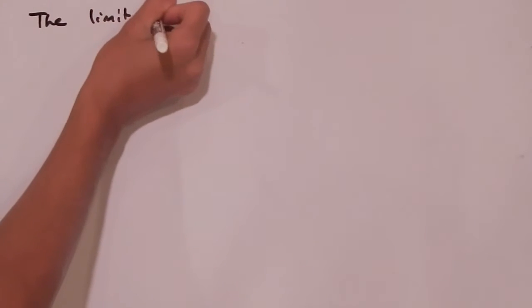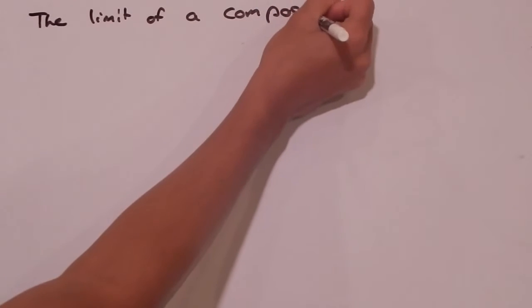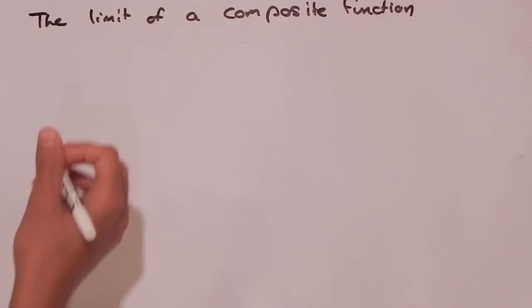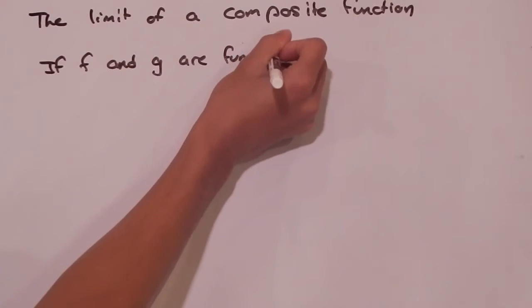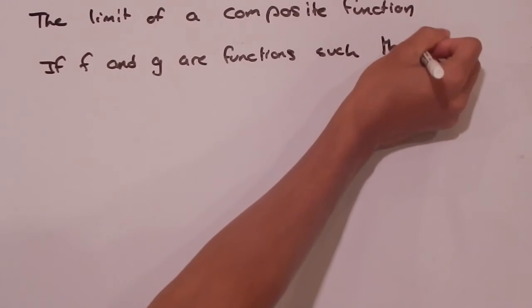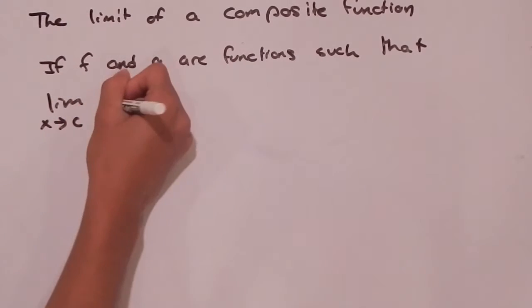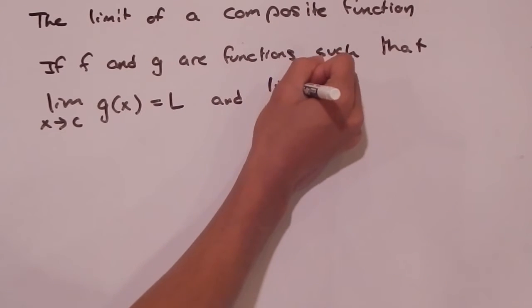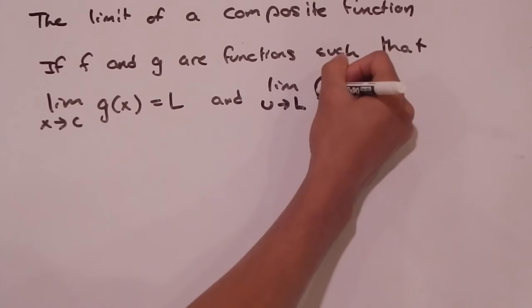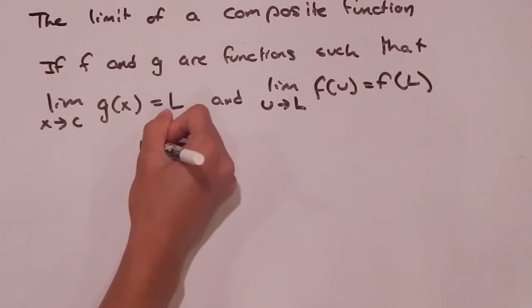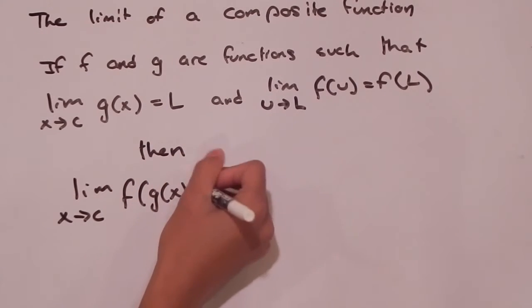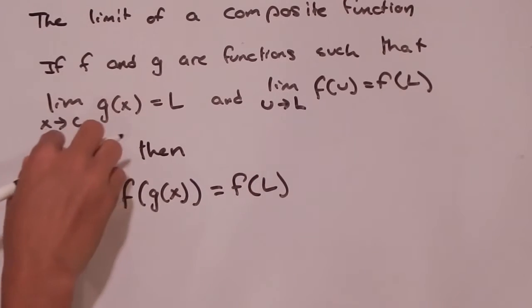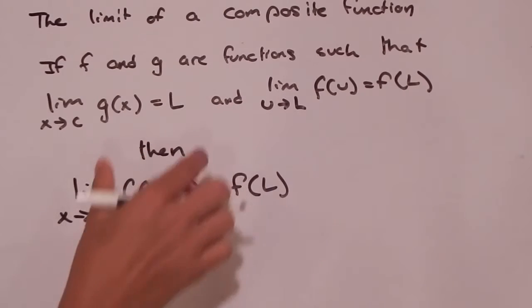In this video we're going to look at another proof — the limit of a composite function. Here's what we're going to be trying to prove: if f and g are functions such that the limit as x goes to c of g(x) equals l, and the limit as u goes to l of f(u) equals f(l), then the limit as x goes to c of f(g(x)) equals f(l). Given those two statements are true, we are trying to show that this third limit is also true.